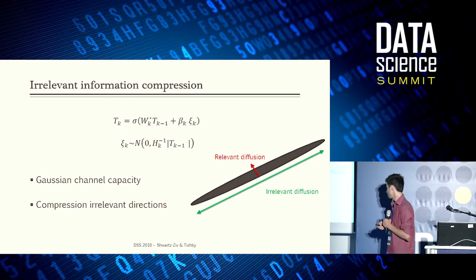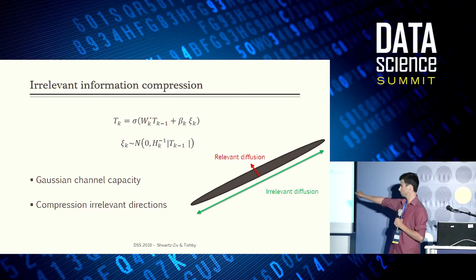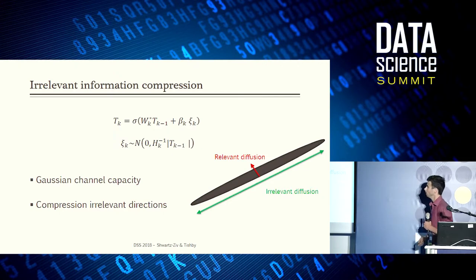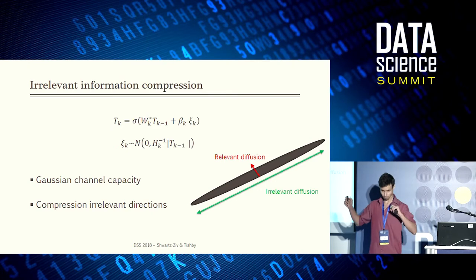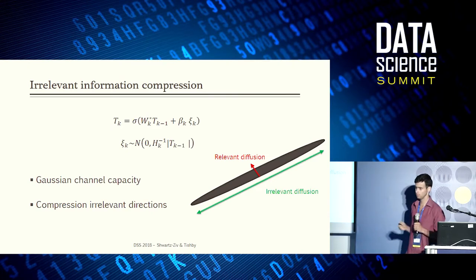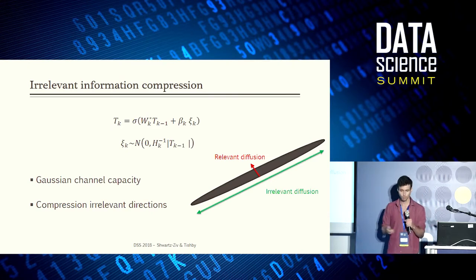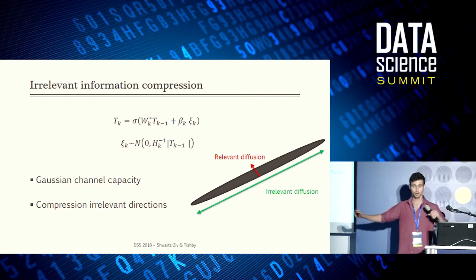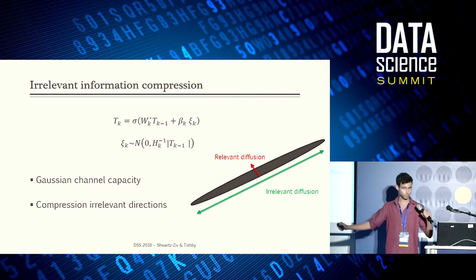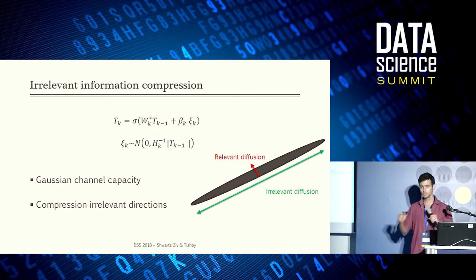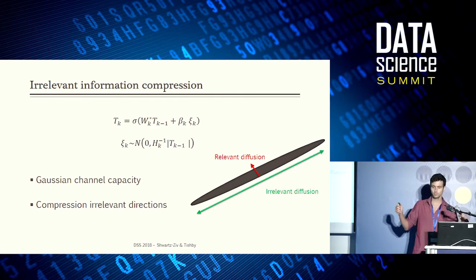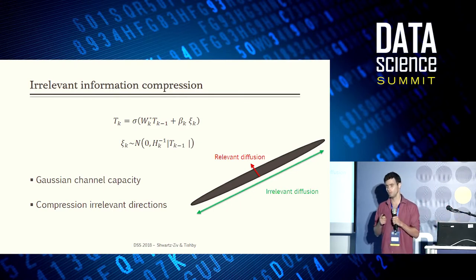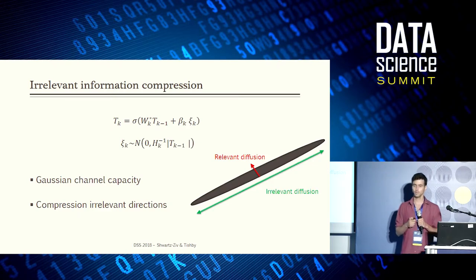To conclude: we have noise in the irrelevant directions, we have very fast diffusion in the irrelevant directions, and this diffusion will compress only the irrelevant directions. We will keep the relevant information.